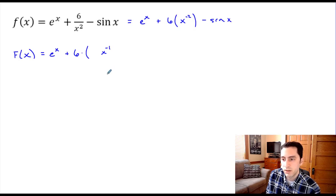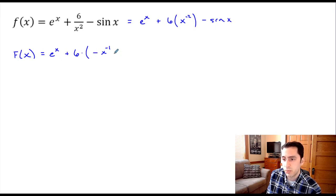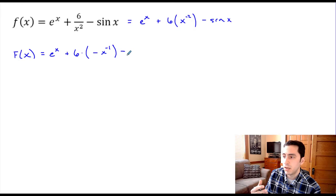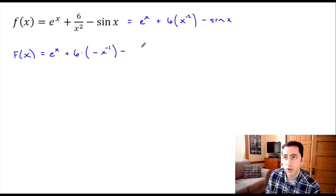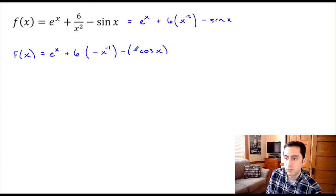If we take the derivative, the negative one would come down and subtract one from the exponent, giving x to the negative two but with an opposite sign. So we put a negative sign out front to make it work out. For the last term, the derivative of cosine is the opposite of sine, so the derivative of negative cosine of x gives us positive sine of x.